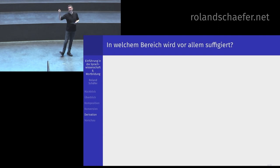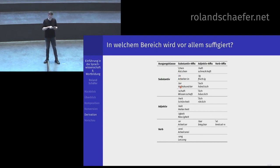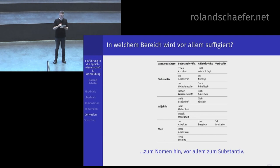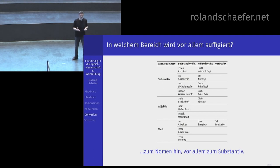In welchem Bereich wird vor allem suffigiert, also angehängt? Schauen Sie sich an: die Wortklasse des Ausgangsstamms und die Wortklasse, was bei der Derivation rauskommt. Verschiedene Affixe wie -chen, -in, -schaft, -heit und so weiter. Sie sehen vor allem eins: es wird vor allem zum Nomen hin deriviert, vor allem zum Substantiv. Das Ergebnis ist in den allermeisten Fällen ein Substantiv oder ein Adjektiv – Adjektiv ist auch ein Nomen – und ganz selten ein Verb. Die Geber-Wortklassen sind Substantive, Adjektive und Verben. Derivation geht ganz prototypisch im Deutschen immer zum nominalen Bereich und vor allem zum Substantiv.